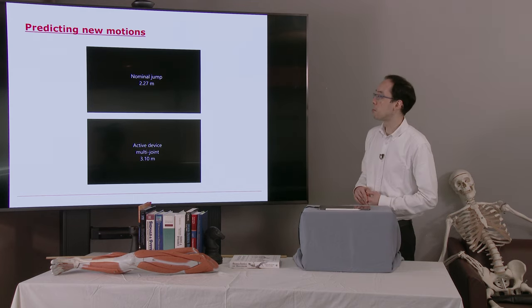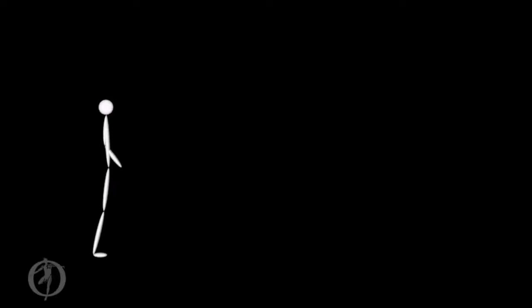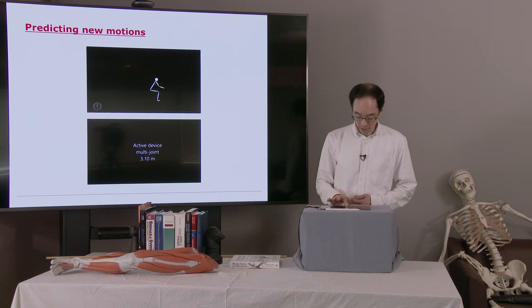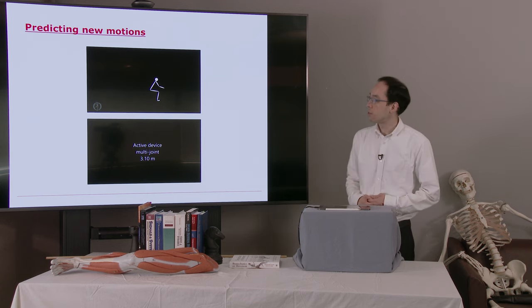So you notice that the model does a crouch before taking off. He didn't tell the optimizer this is what the model should do. It found this solution. So that's a neat way of validating these results.